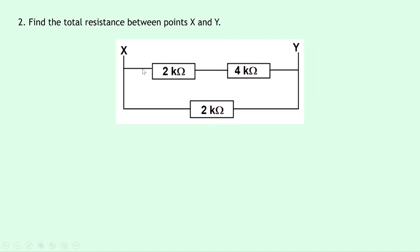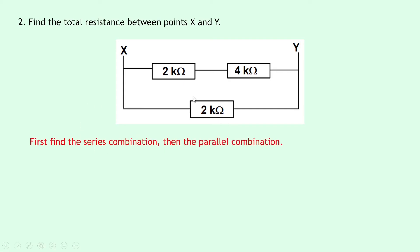Question 2 says to find the total resistance between points X and Y, and again this is the second example from the theory video for the combination circuits. Here's X and Y. So in order to find the total resistance here, we need to consider the total resistance of these resistors. We've got a 2,000 ohm resistor and a 4,000 ohm resistor in series, and this is in parallel with a 2,000 ohm resistor. The easiest thing to do here would be to first find the series combination of the 2,000 plus the 4,000, and then the parallel combination of that answer in parallel with the 2,000 ohm resistor.